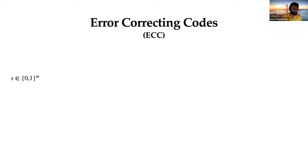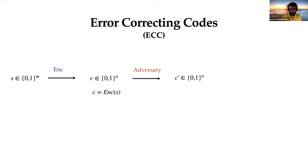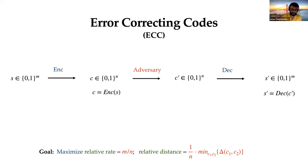Let's start off with non-malleable codes. To motivate them, let's recall error correcting codes. The problem is you have a message S, you want to transmit it over a noisy channel, and if not too many bits are flipped, you want to recover back S. There's an encoding function which encodes a message to a codeword, and an adversary tampers it so C gets tampered to C prime. Then we decode the tampered codeword to get S prime, with the hope that S equals S prime. The goal is to recover S and maximize the relative rate.